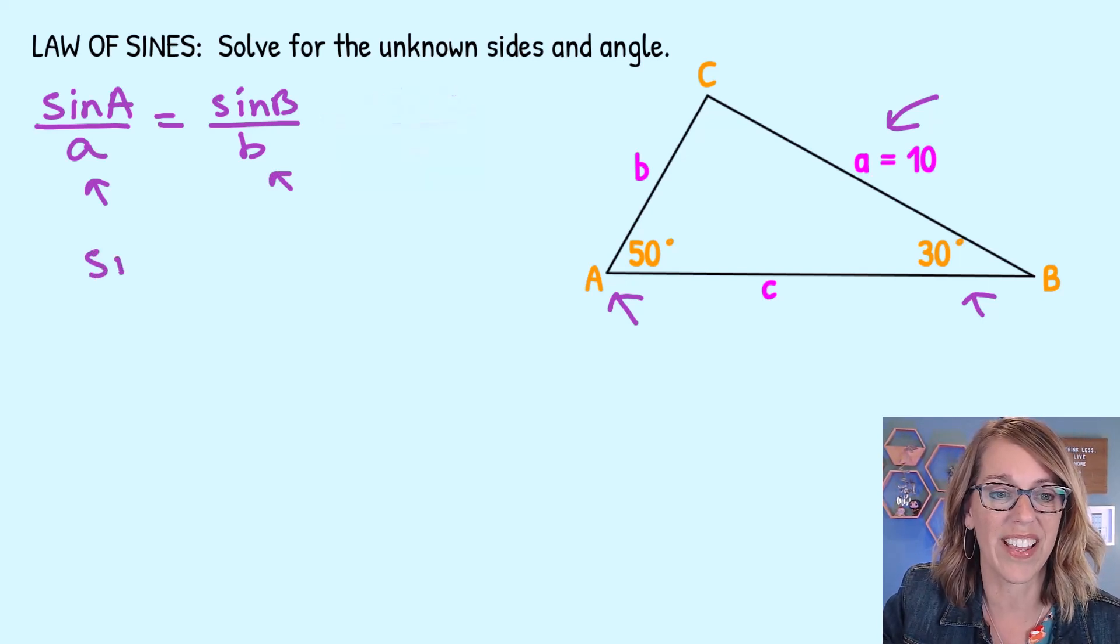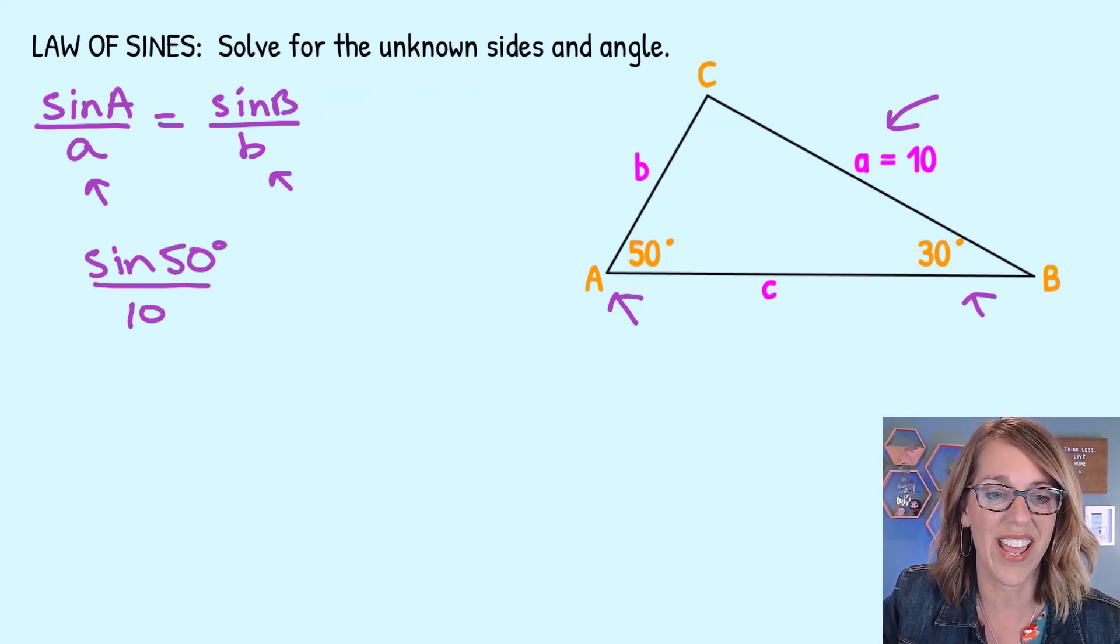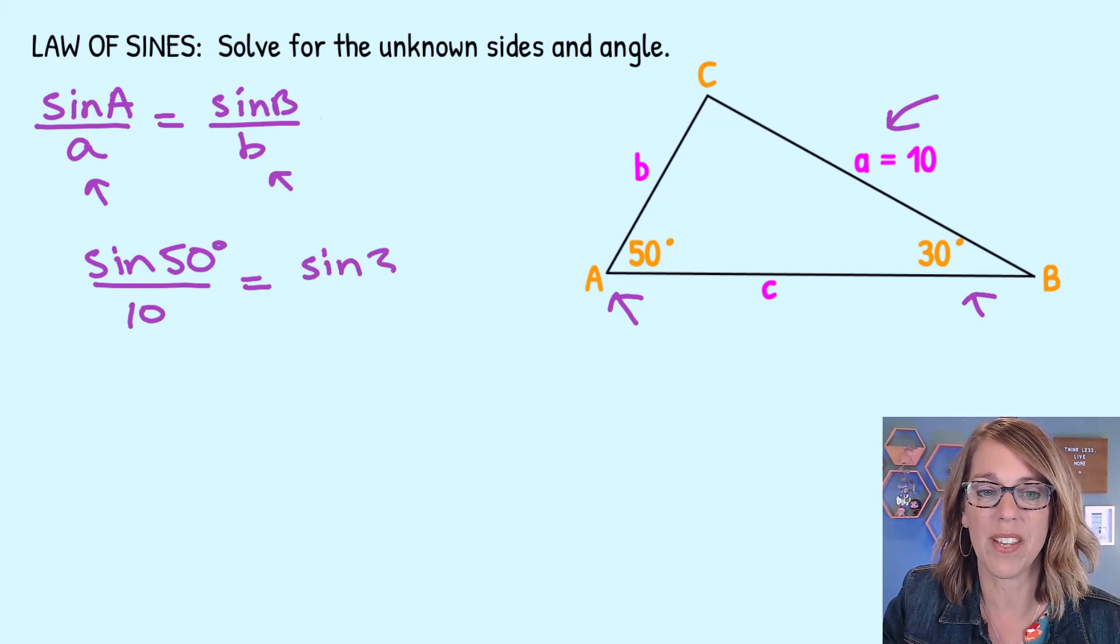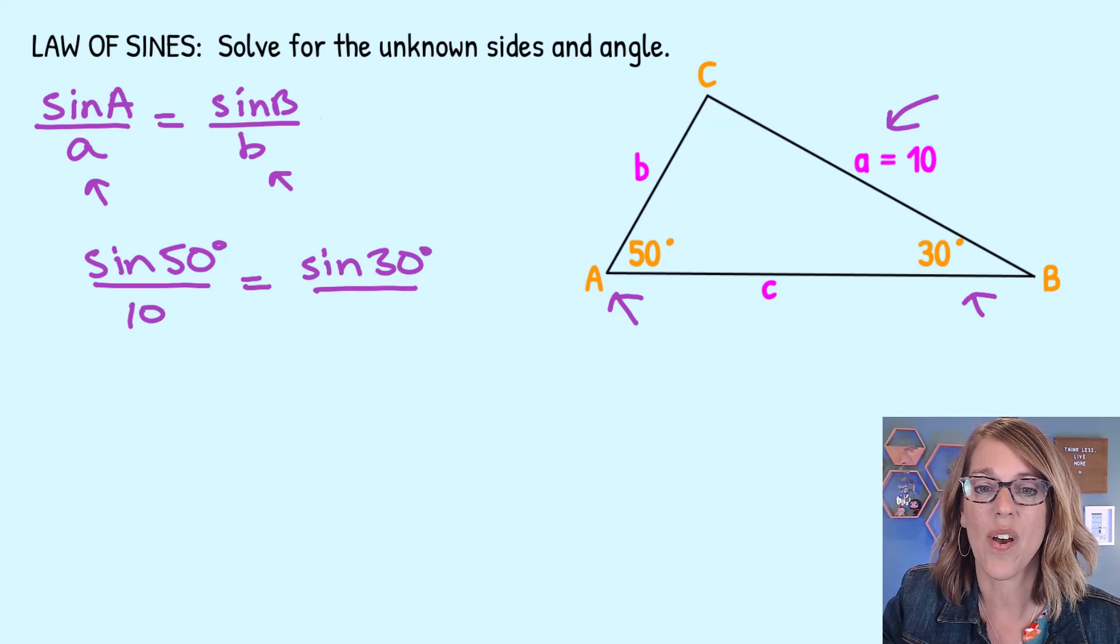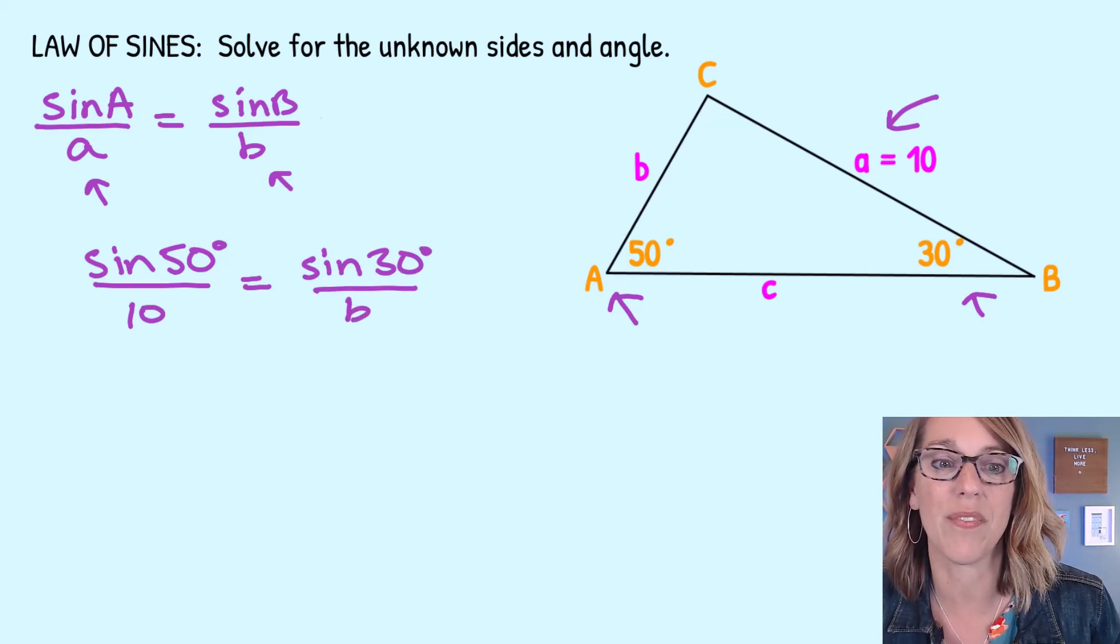Putting those together, I get the sine of angle A, which is 50 degrees, over side A, which is 10, and that's equal to my proportion for B. So the sine of angle B, which is 30 degrees, over side B, which is what I'm solving for.